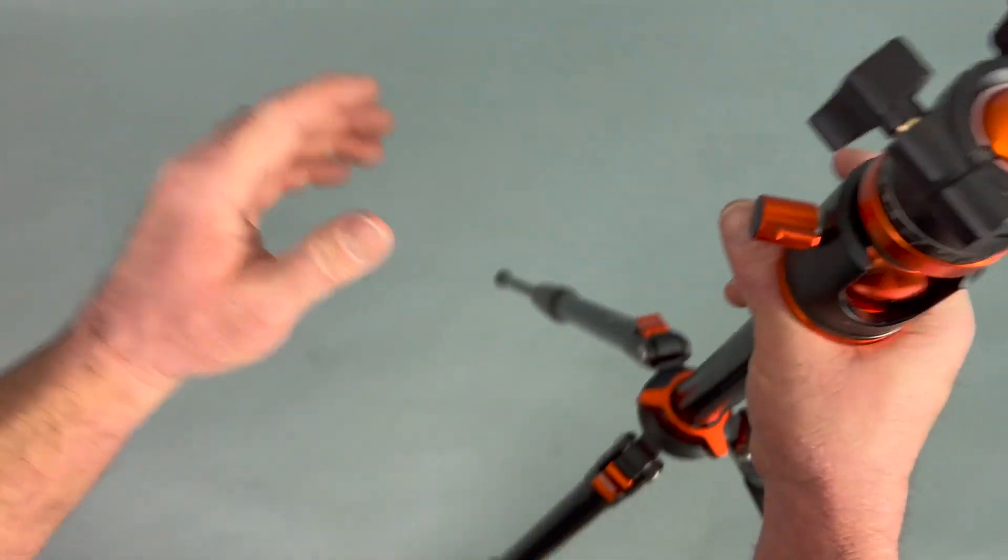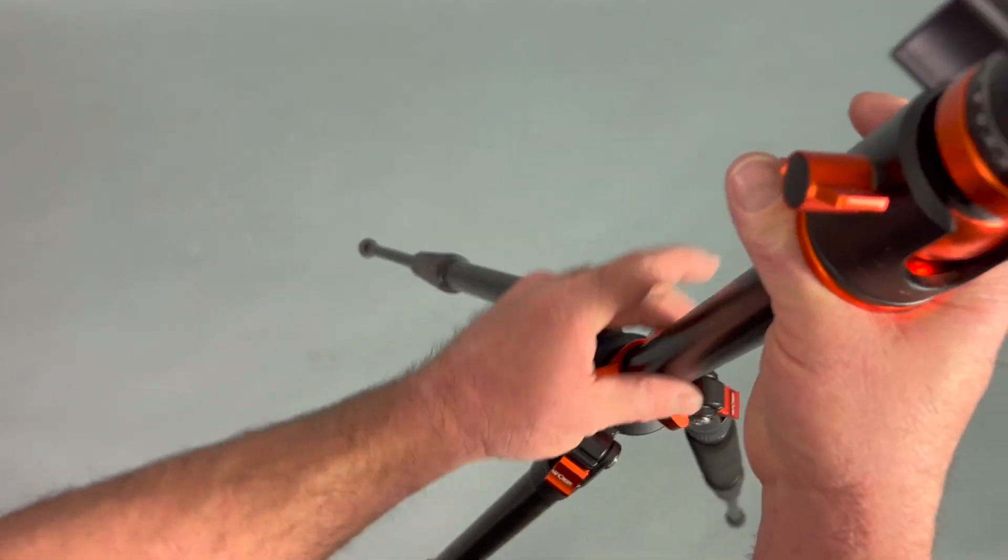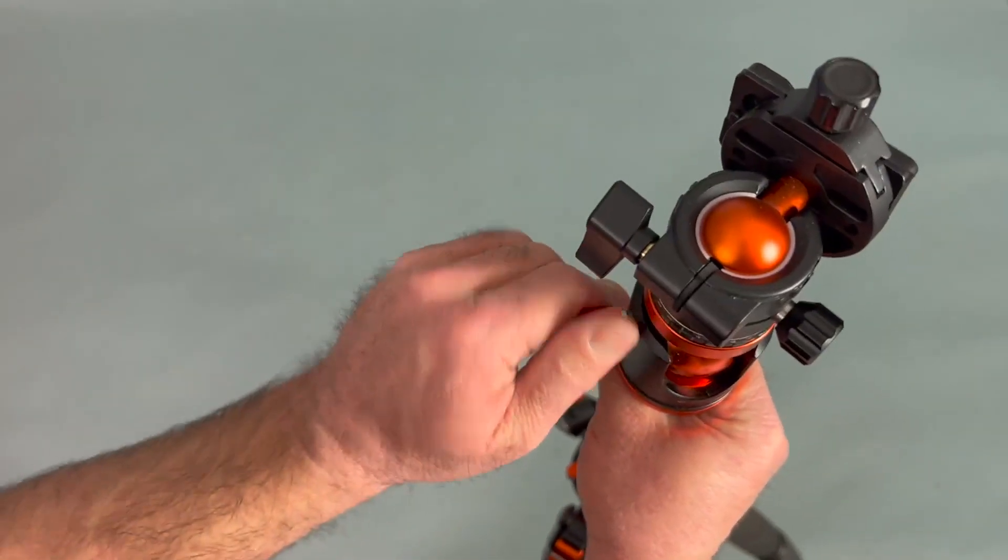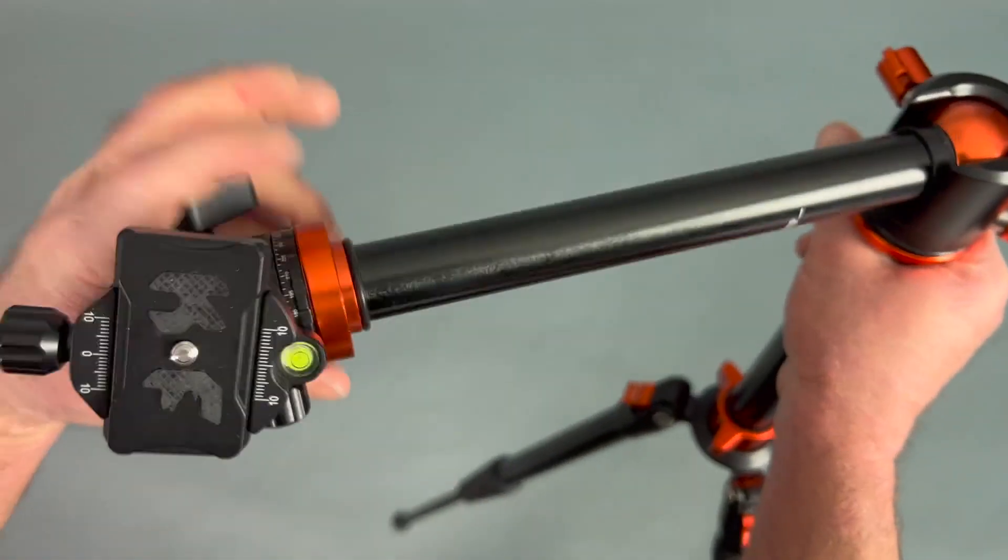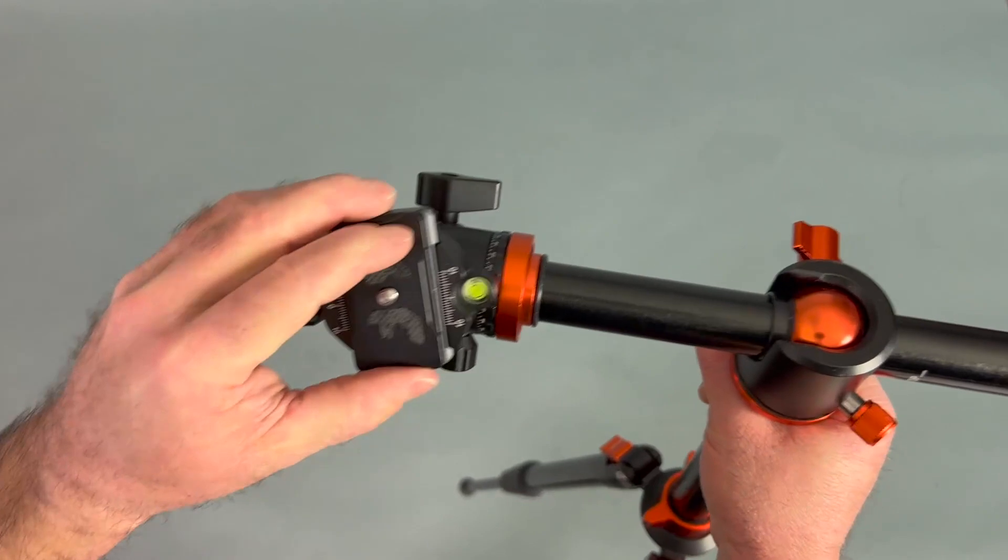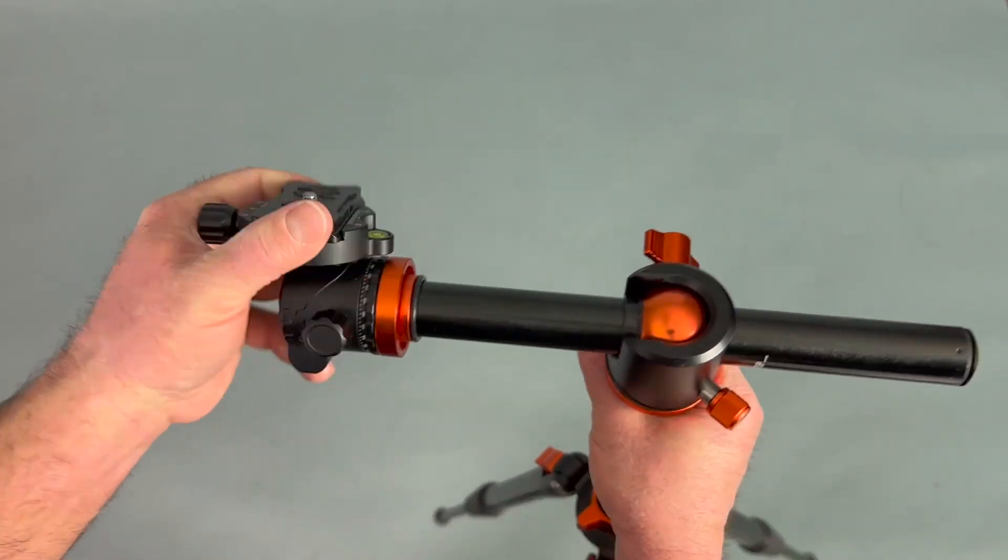Between the legs being adjustable, the height of the collar, the inner tube being adjustable, and the inside of it being flippable, you can see how there's really no position you can't put this in to get the exact shot and angle you're after. Very impressed with that.